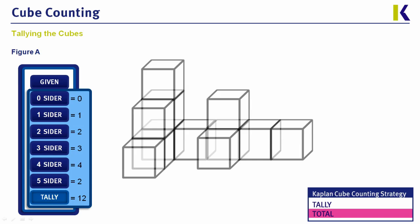Either way, once you've got this system down, you'll always want to verify that the total number of tallies you've counted — here 12 — matches the total number of cubes in the figure, which again is 12. By doing this, you'll find that the questions are extremely easy to answer.